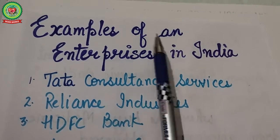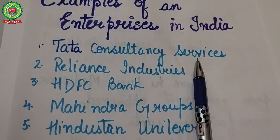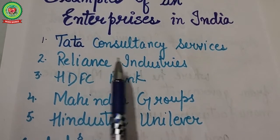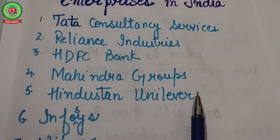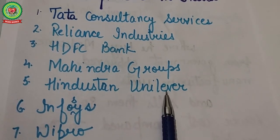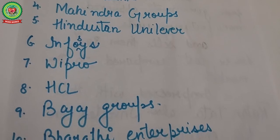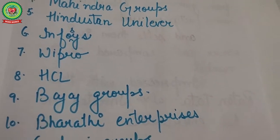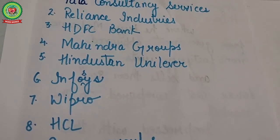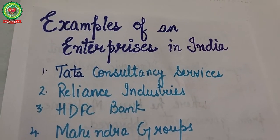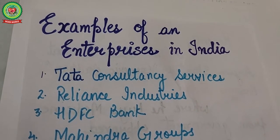First of all, we will discuss some examples of enterprises in India, like Tata Consultancy Services, Tata Groups, Reliance Industries, HDFC Bank, Mahindra Groups, ICICI Bank Limited, Hindustan Unilever Limited, ITC, Wipro, Infosys, Bajaj, HCL, Godrej, and Jindal. These are some examples of enterprises that are successfully run in India and provide goods and services to their customers.